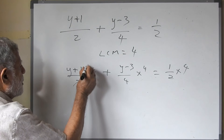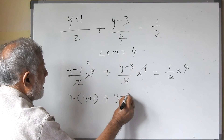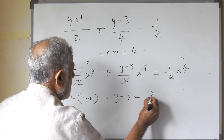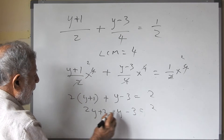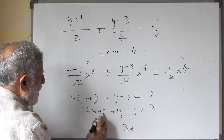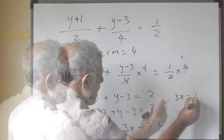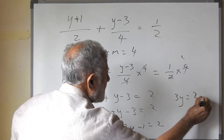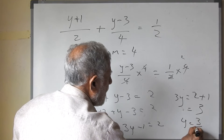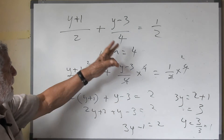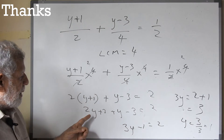So 2 and 4 cancel, giving 2 times (y plus 1), plus (y minus 3), equals 2. That is 2y plus 2 plus y minus 3 equals 2, which gives 3y minus 1 equals 2. So 3y equals 2 plus 1 equals 3. Therefore y is equal to 3 upon 3, that is equal to 1. Find the LCM and multiply each and every term by it — then automatically the denominators cancel.